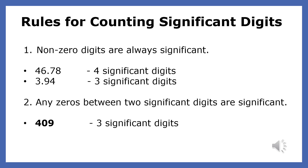Any zeros between two significant digits are significant. So the zero between the non-zero digits four and nine is significant — that makes three significant digits. A zero trapped between non-zero numbers is always significant.